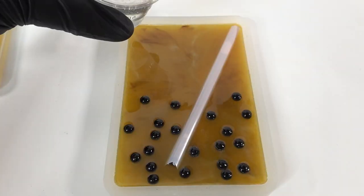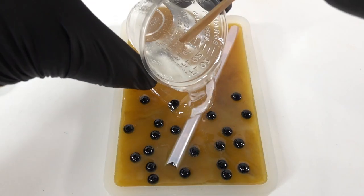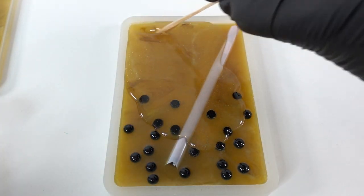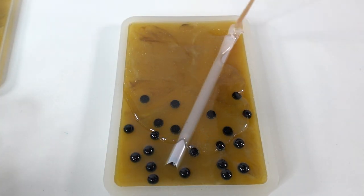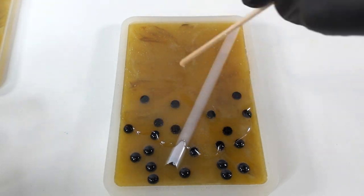It's been a few hours and the photo holder is ready for the second layer. Here, we're just going to add a clear layer all the way to the top. We want to make sure that the boba and straw is completely immersed in the resin.